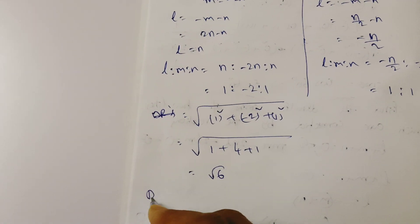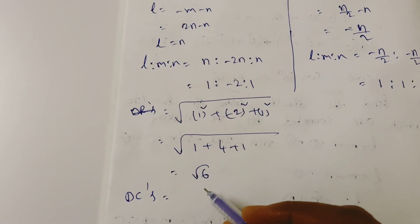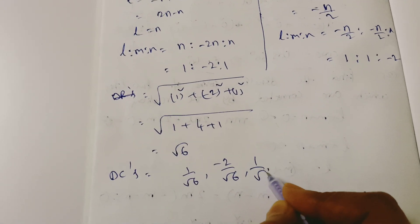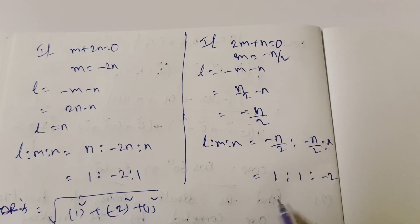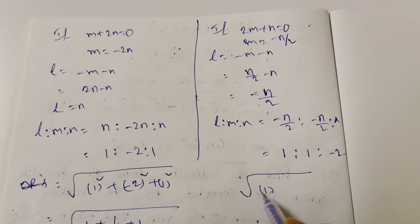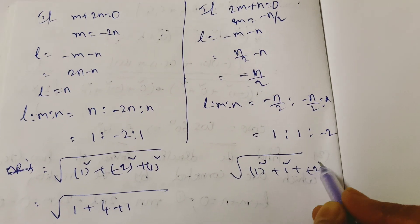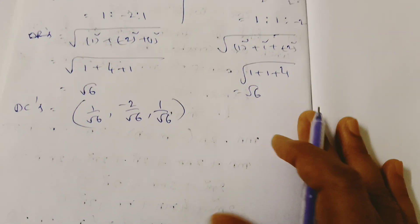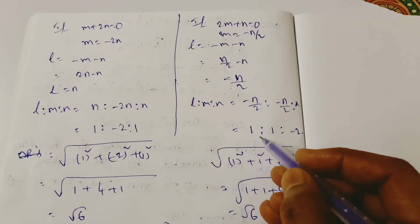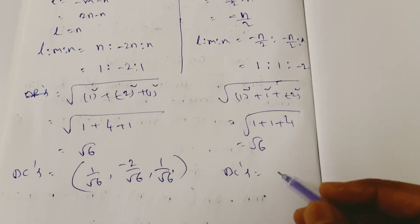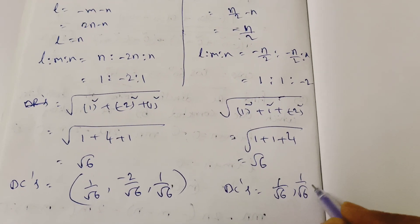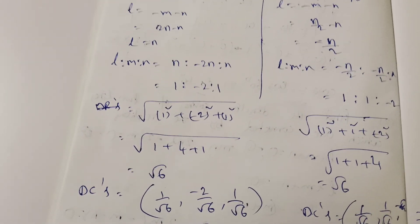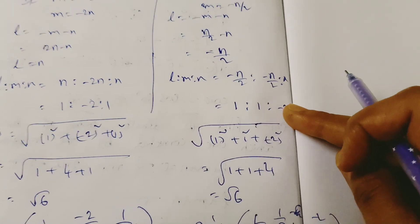The direction cosines are 1 by root 6, 1 by root 6, minus 2 by root 6. This is the DC for the second line. So we have found the direction cosines for both lines.